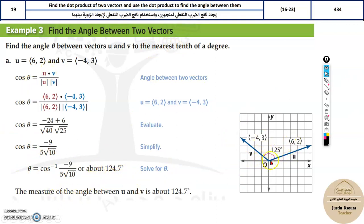Now in the component form you get an idea where the vector is. So 6 over here and y is 2, so this is where the vector is. And then the other vector is in the negative quadrant, I mean the second quadrant. And the angle between them is basically almost 125 degrees.